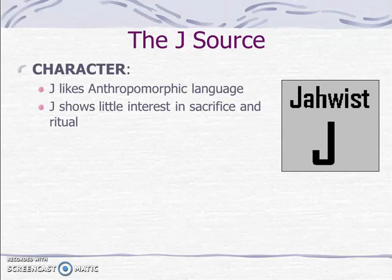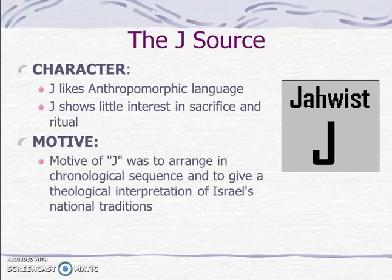The character of the J source is that it tends to use very anthropomorphic language, referring to God in very human-type terms. J shows little interest in sacrifice or ritual, and the motive of J was to arrange the chronological sequence of Israel's history and to give a theological interpretation to Israel's national traditions.